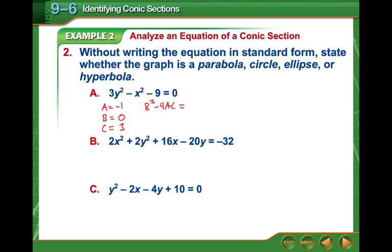So that's going to be zero squared minus four times negative one times three. Zero squared is zero. Negative four times negative one is positive four. Positive four times three is positive twelve. Zero plus twelve is twelve. That is greater than zero, which means we have a hyperbola.